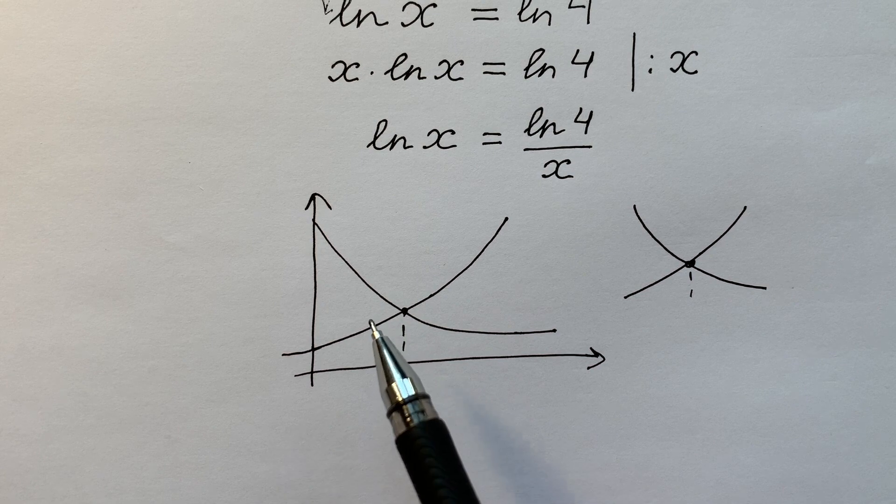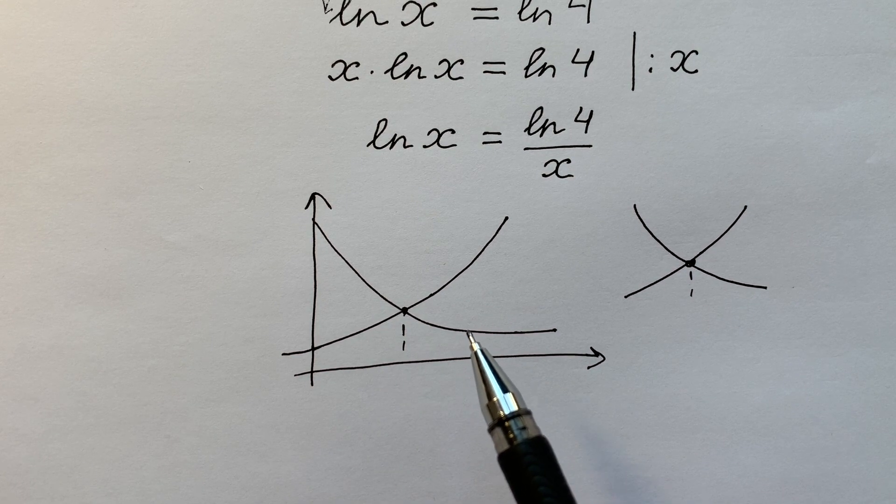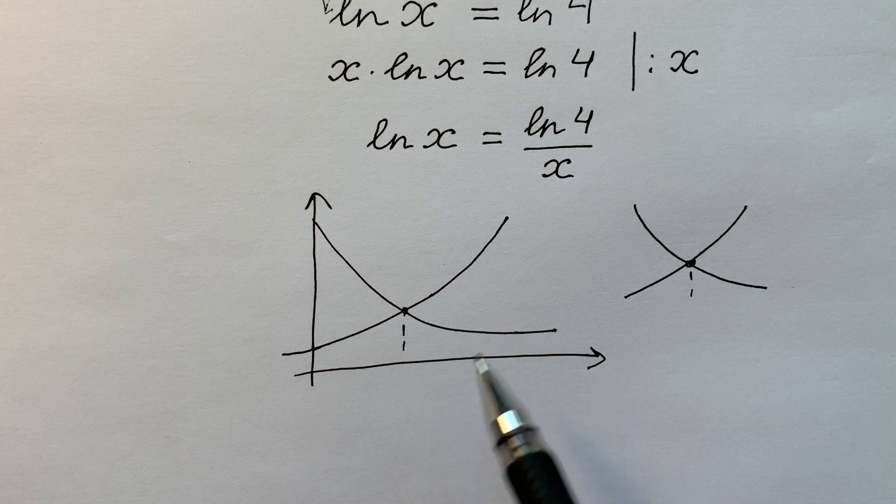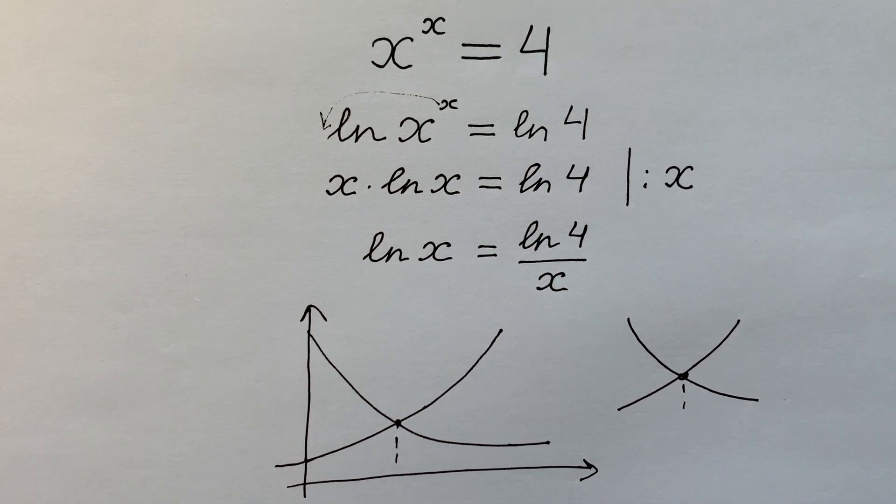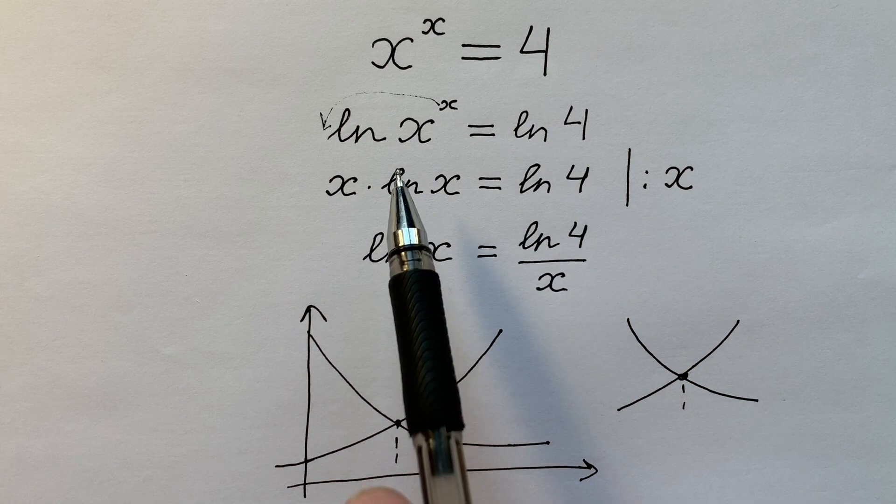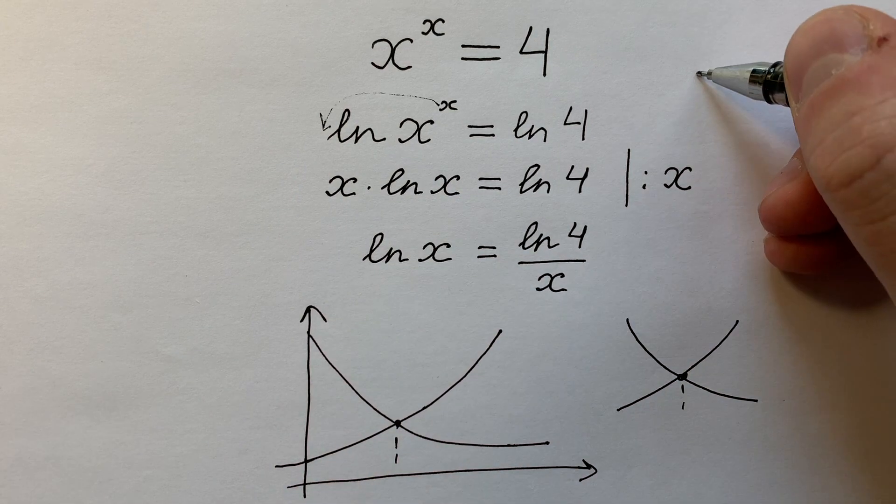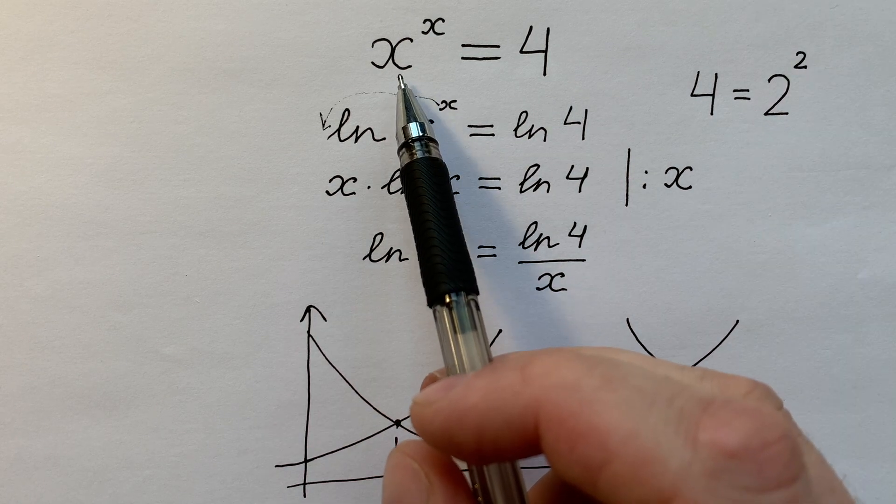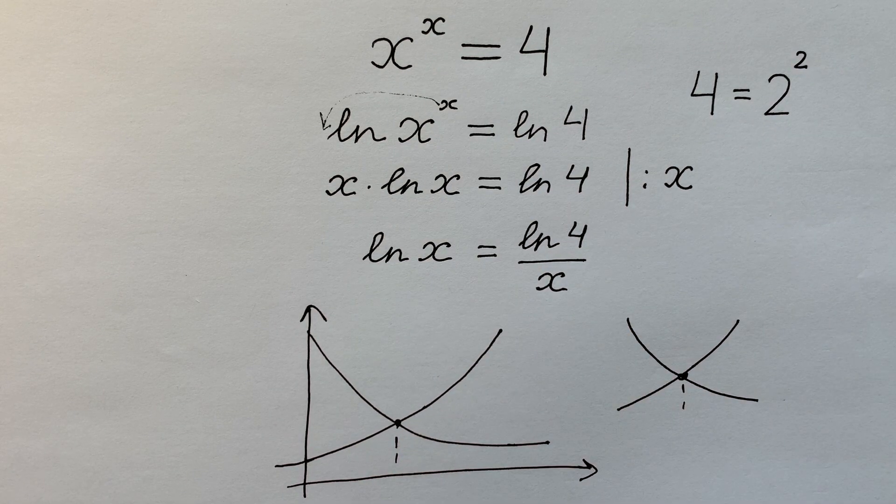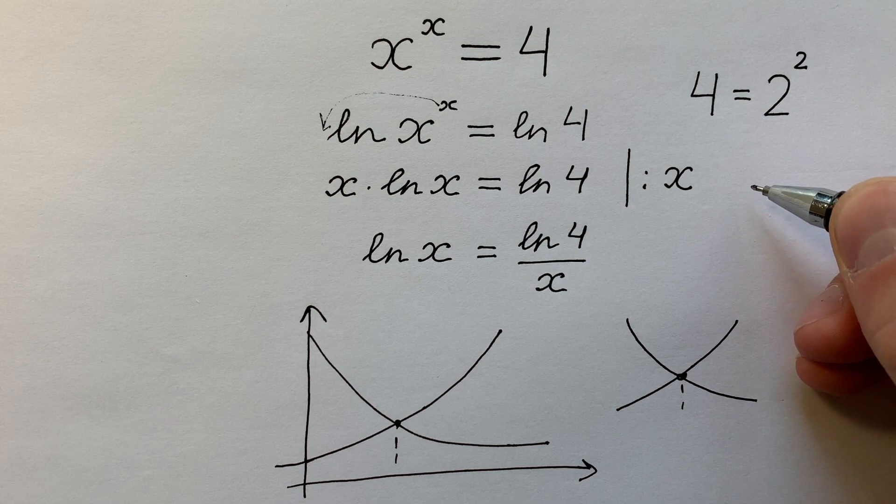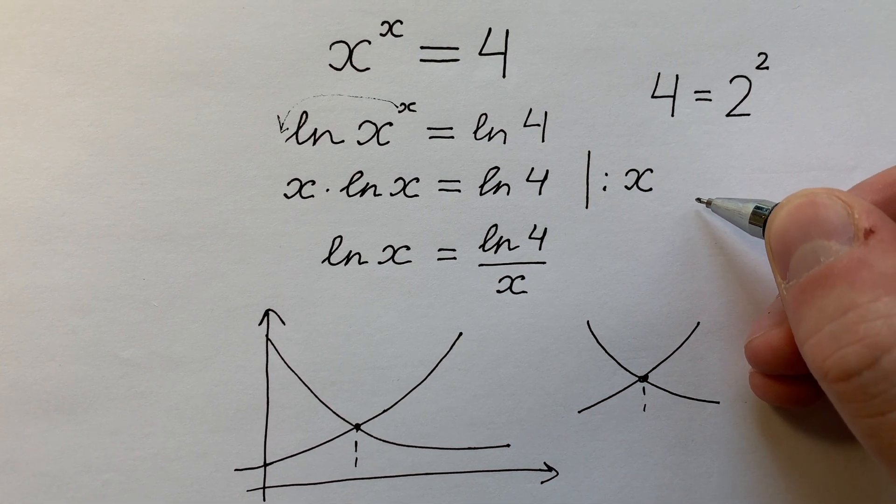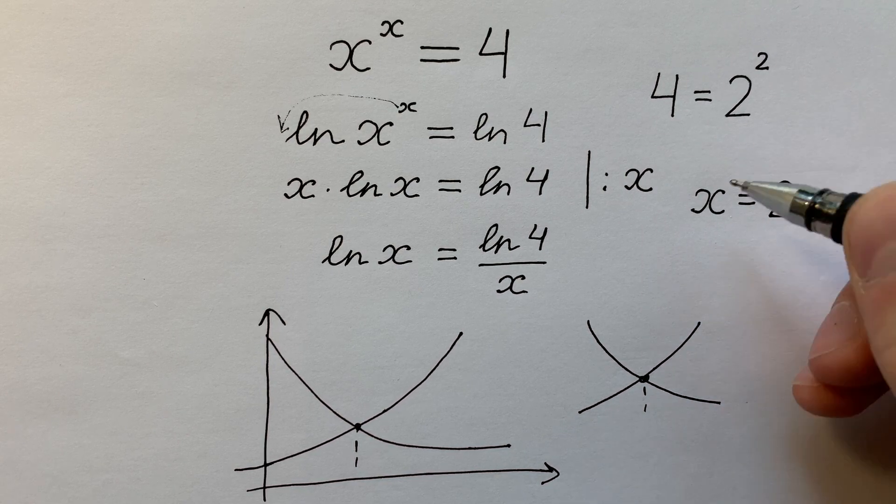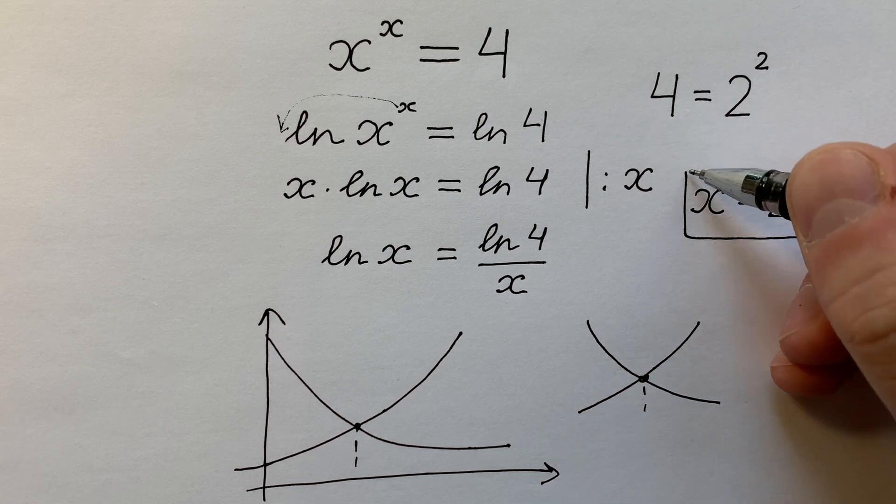So the one step that we're going to do now is to try to guess what is this solution. What is the one and only one x that can solve this equation? If we try to look closely, we can figure out that 4 equals to 2 squared. And on the left side we have x to the power of x. So that's why the one and only one solution of this equation is x equals to 2. Here is the answer.